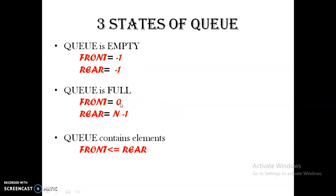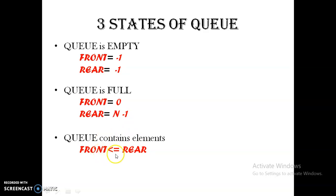The size of the queue is N, so the last element's position will be N minus one. If front equals zero and rear equals N minus one, that means elements are occupying positions zero to N minus one — the queue is full and cannot accommodate any more elements. If the queue contains some elements, front is less than or equal to rear.